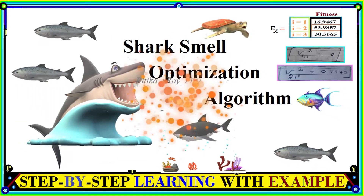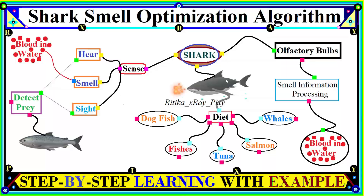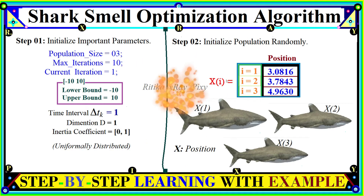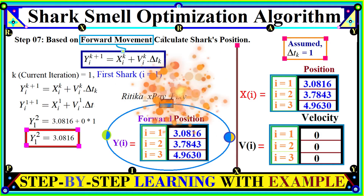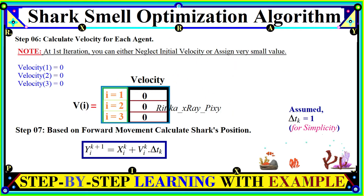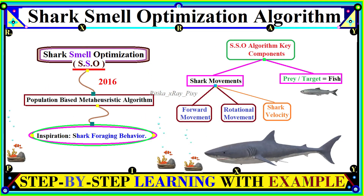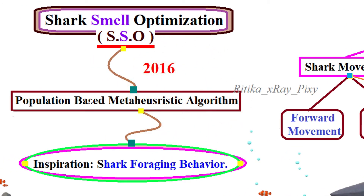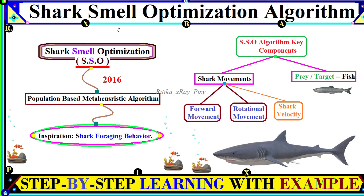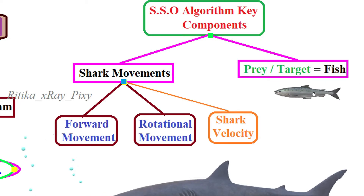This video is based on the Shark Smell Optimization algorithm. In this video, we will try to understand what this algorithm is all about, how it is working, the various steps used in this algorithm, and the different mathematical models used for position update and velocity calculation. We will also look at key components used in this algorithm, including shark movements and the sense of smell.